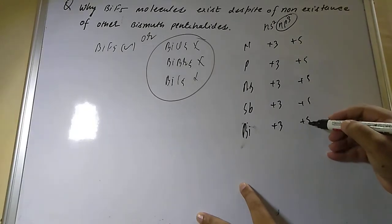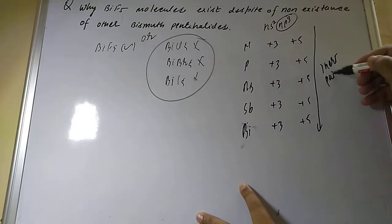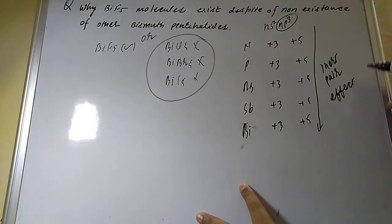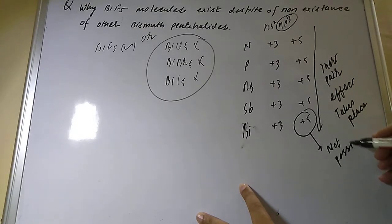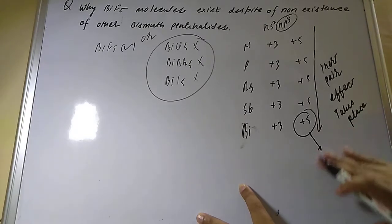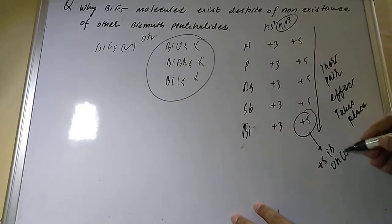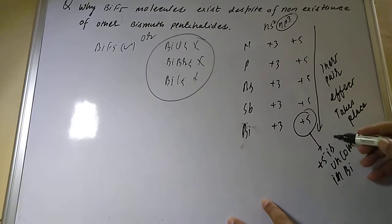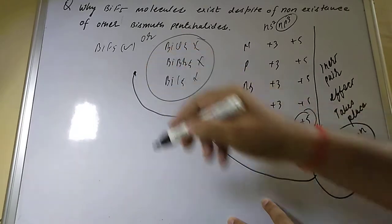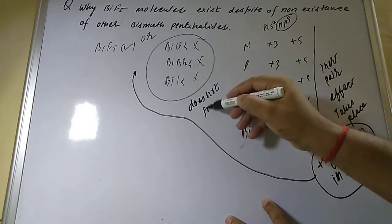Now as we go down the group, keep in mind that the inert pair effect takes place. Due to the inert pair effect, the +5 oxidation state is uncommon in bismuth. So bismuth prefers +3 over +5, and compounds like BiCl₅, BiBr₅, and BiI₅ do not form because the +5 oxidation state is uncommon in Bi.